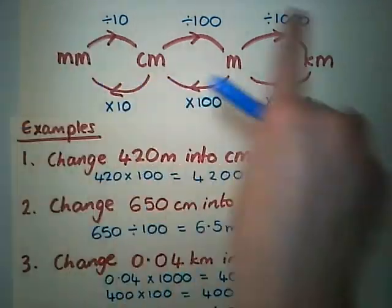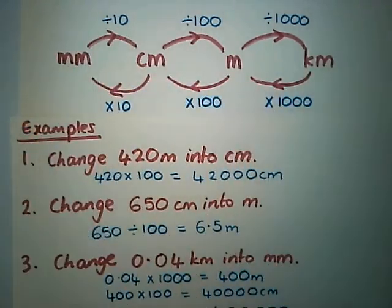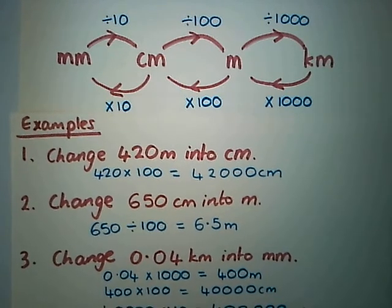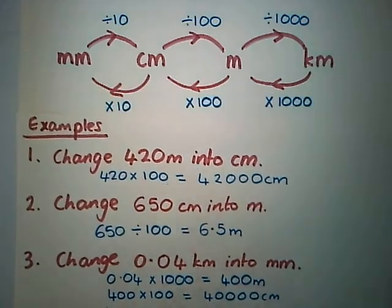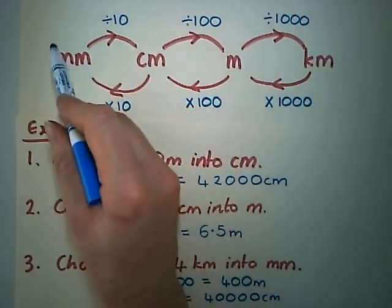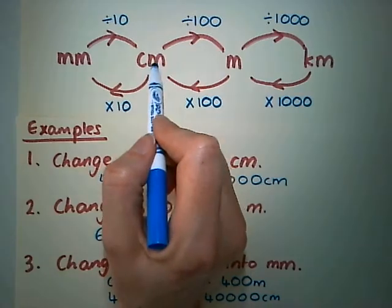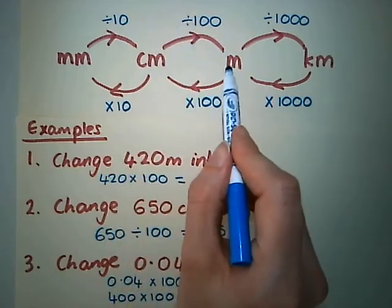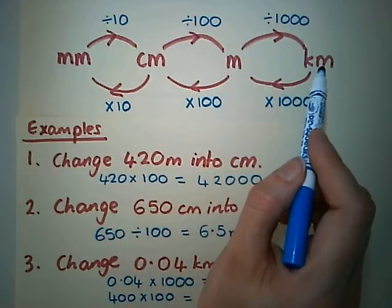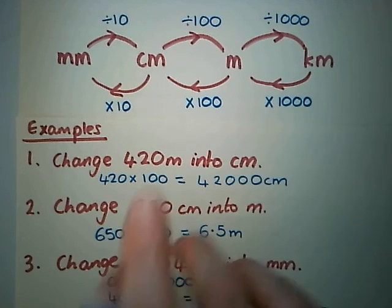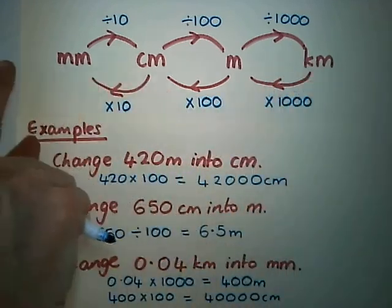In your notes, you should have this diagram, and I would advise that you keep that handy when you're working through the work. When you're going from millimeters to centimeters we divide by 10, from centimeters to meters divide by 100, and to change into kilometers from meters we divide by 1000. But when you're going the other direction, make sure you do your multiplication instead.